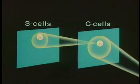Even if the stimulus feature is shifted in position and another S-cell is activated instead of the first one, the same C-cell keeps responding. Hence, the C-cells' response is less sensitive to shifts in position of the input pattern.